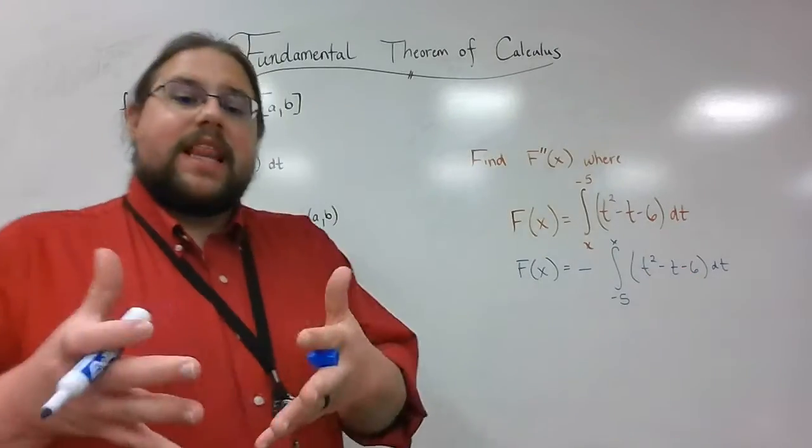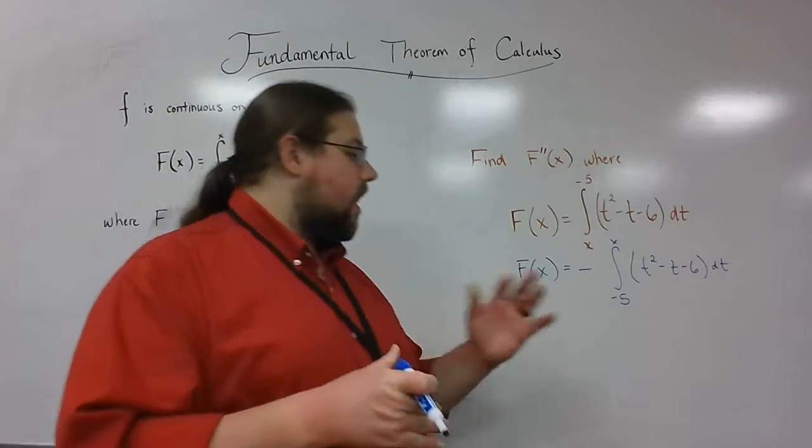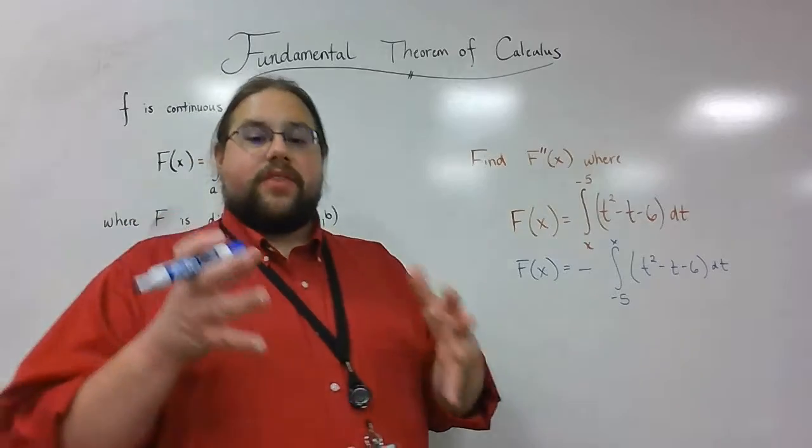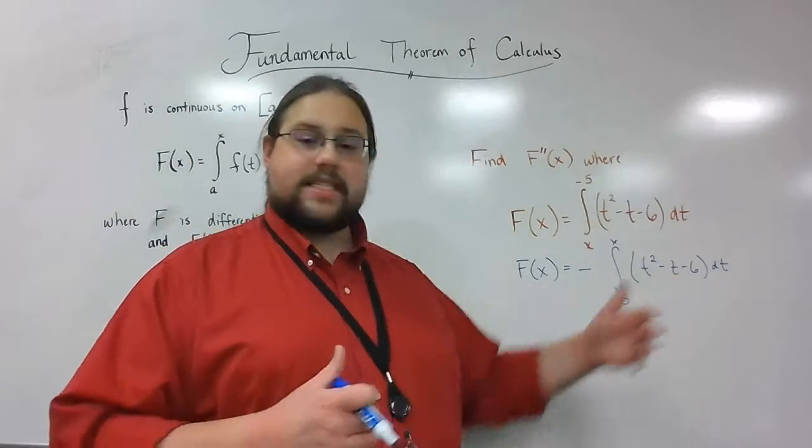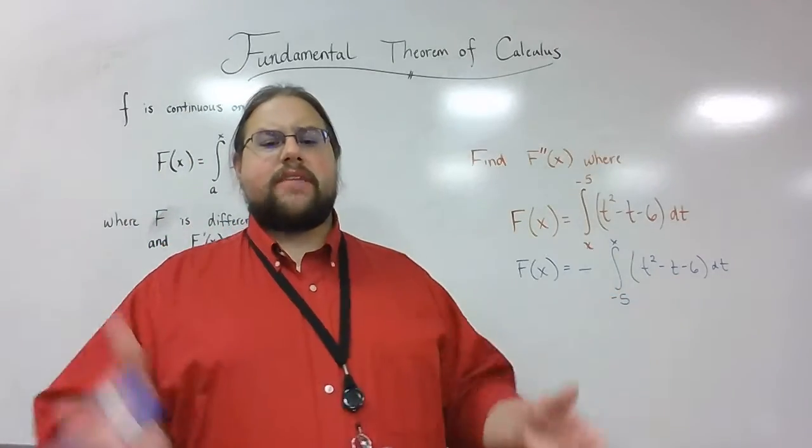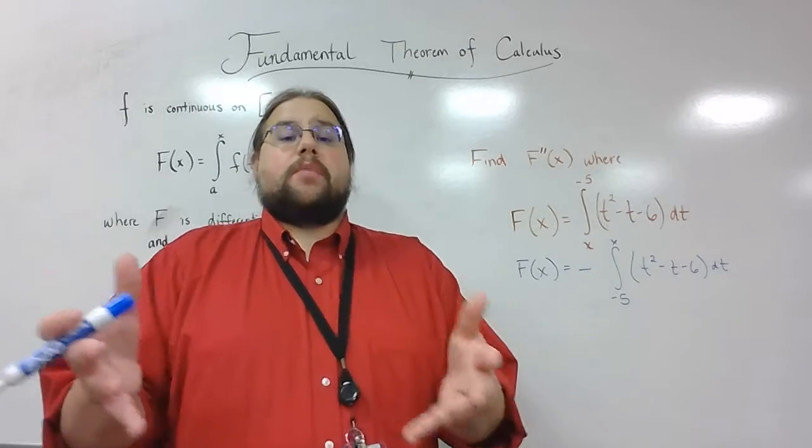Now, the second thing I want to remind you of, in the last video, I talked about how the lower limit needed to make sure that this was a continuous function. Since this is a polynomial, it's continuous everywhere, so it doesn't really matter what the bottom number is in this case.